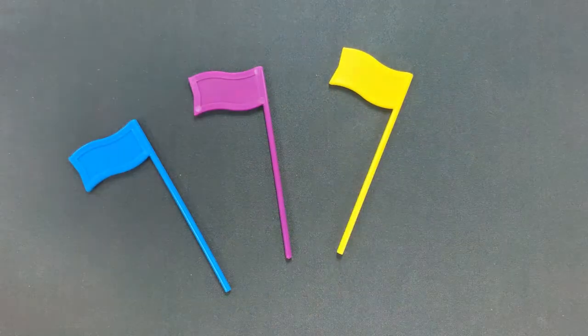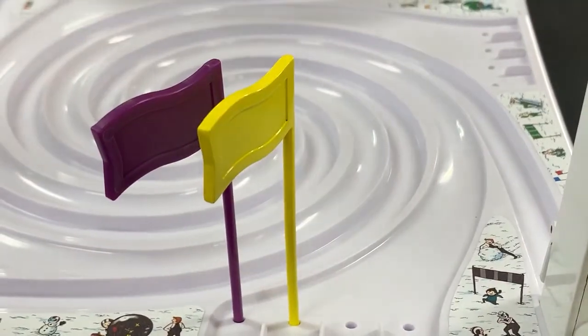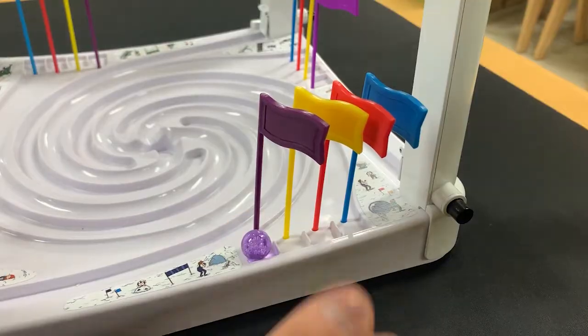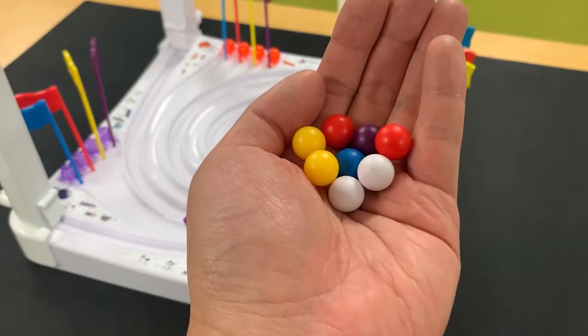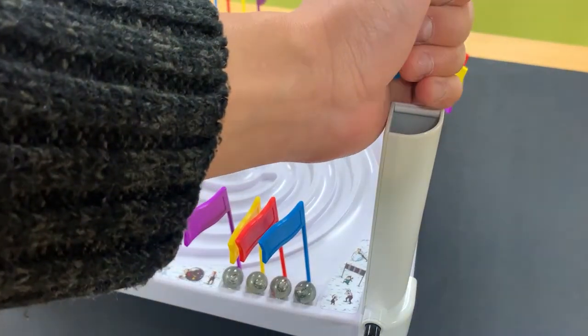To set up, players take one each of four different color flags and place them in the same order with others and place your player marbles on the tracks. Take eight score marbles from the pocket and put it in your own marble launcher tower.